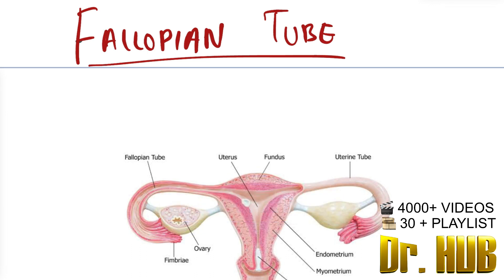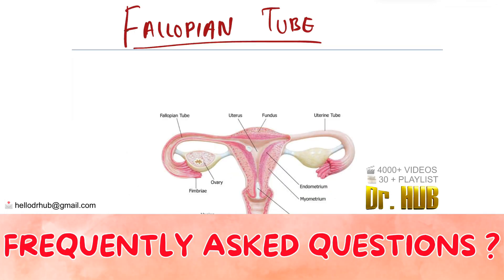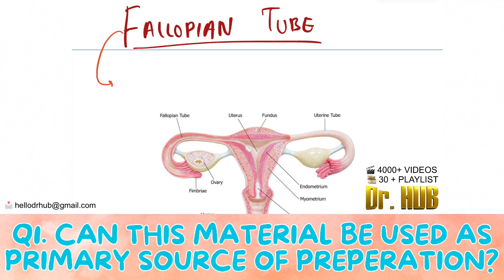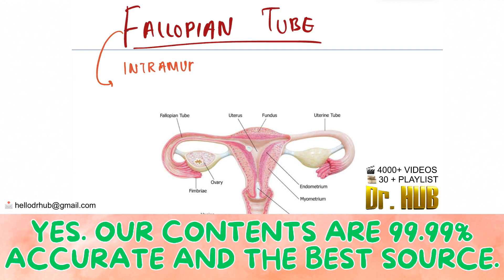Let's look at the gross anatomy. The parts of the fallopian tube include: first, there is the intramural, which is also known as the interstitial.